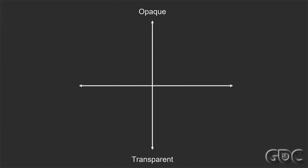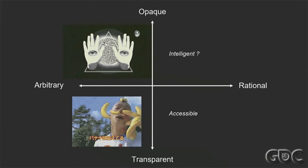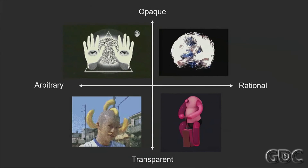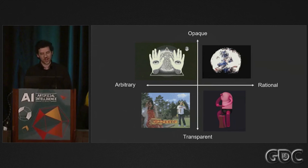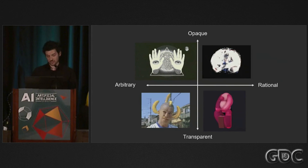An interesting ecology of data relationships would probably have different kinds of play: opaque ones, transparent ones, those that seem arbitrary, those that are rational, the esoteric, the absurd. I think the abstraction and recontextualization of data can lead to all sorts of results.